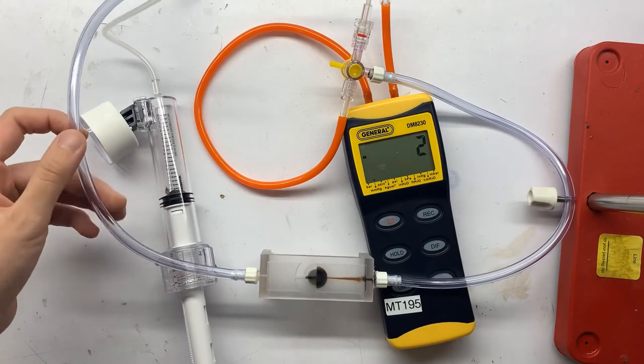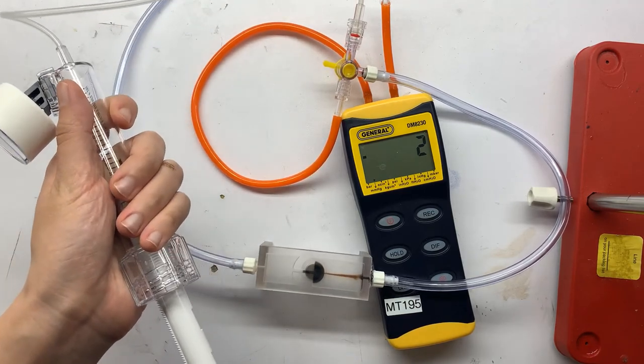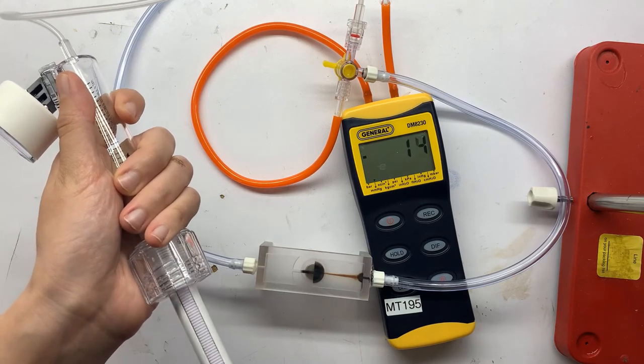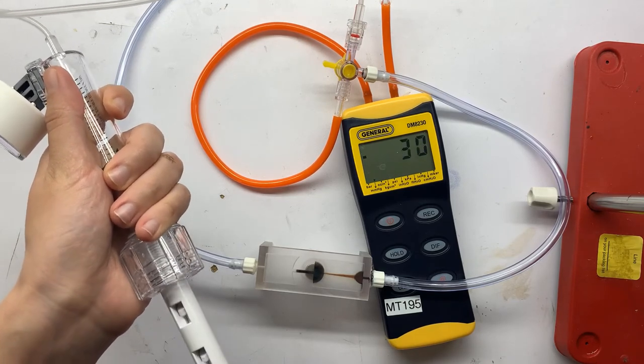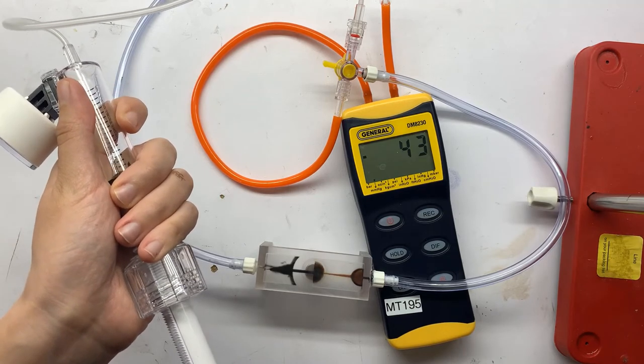The manometer currently reads two millimeters of mercury, so we need to subtract that from our final value. We're only using one magnet and the air is being pushed from the right side to the left side. As you can see, the ferrofluid is moving through that channel. Our sustainable pressure reads 43, so the final value is 41.